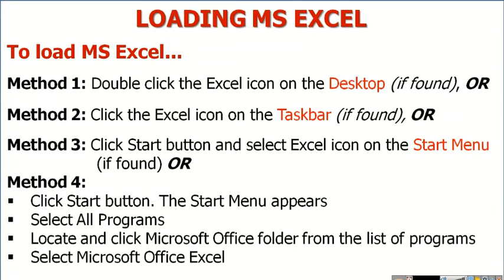Method 4: If the Excel icon is not placed on any of the above mentioned locations — that is the desktop, taskbar, and start menu — then you perform the general steps. Click the start button; the start menu appears. You select all programs. Locate and click the Microsoft Office folder from the list of programs, then select Microsoft Office Excel to load your program.